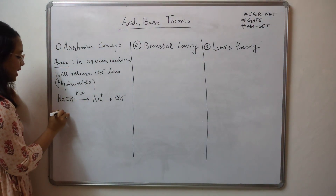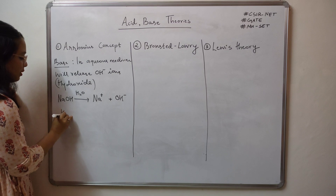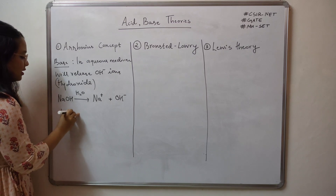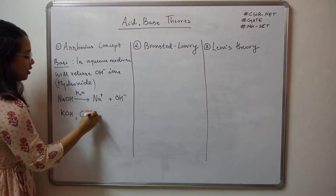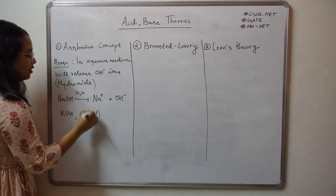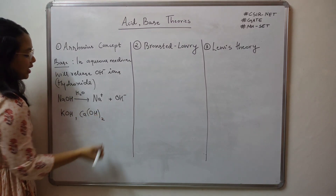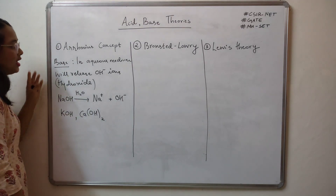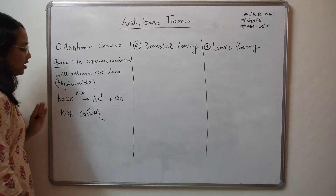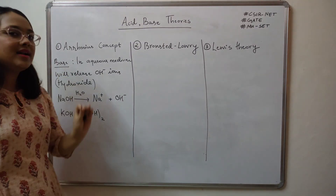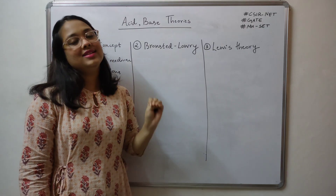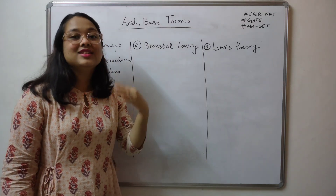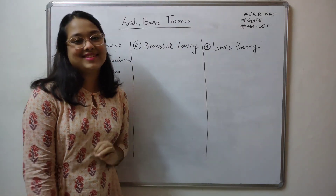Some more examples: potassium hydroxide acts as a base, and calcium hydroxide is another example. So this concludes the Arrhenius concept. Now let us move forward to the Bronsted-Lowry concept.